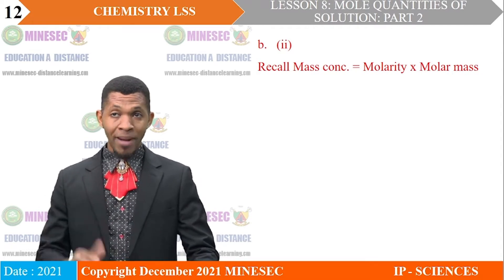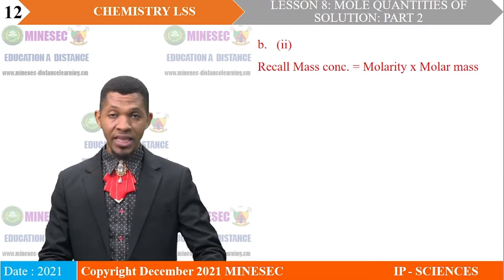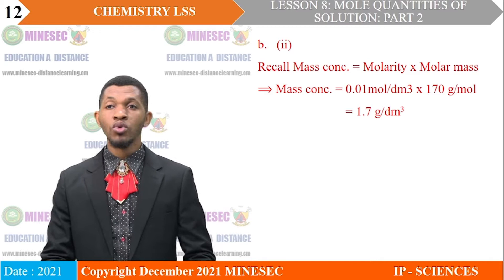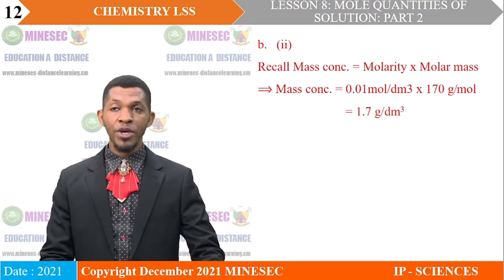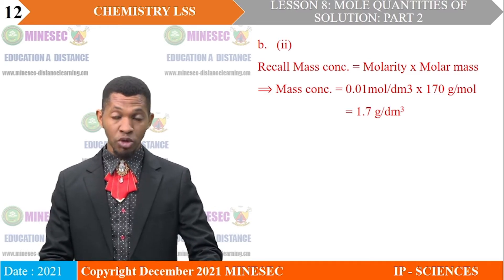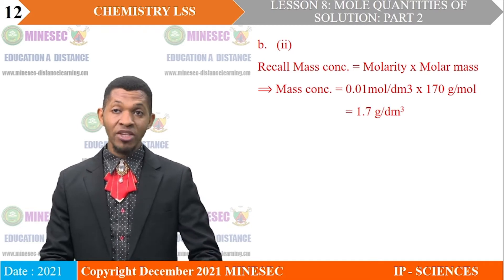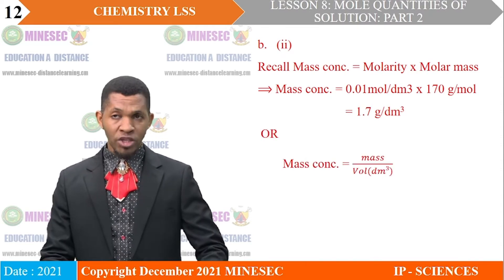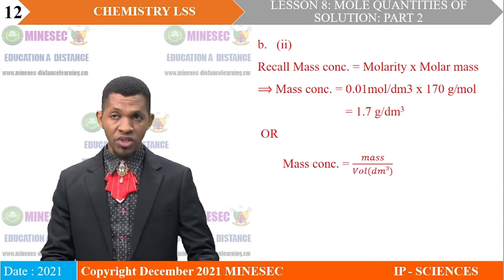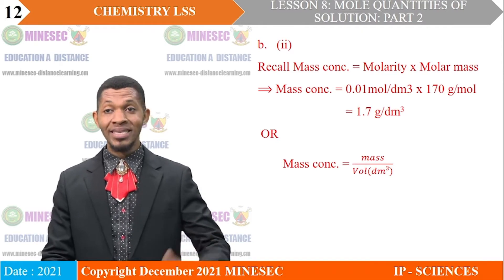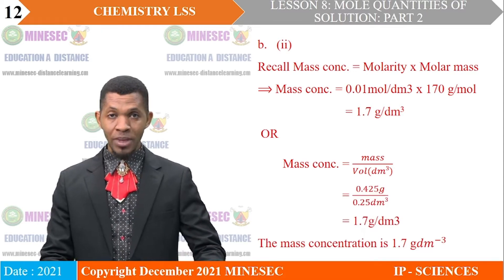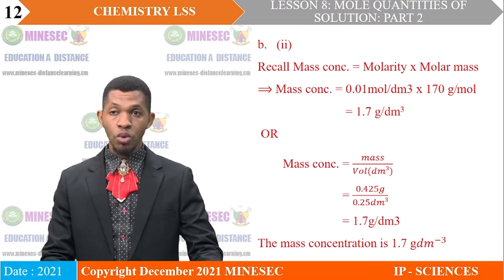Roman 2: Mass concentration equals molarity times molar mass. Substituting molarity and molar mass, mass concentration equals 0.01 moles per cubic decimeter times 170 grams per mole, giving mass concentration equal to 1.7 grams per cubic decimeter. This can also be calculated using mass concentration equals mass divided by volume in cubic decimeters; substituting and simplifying gives the same result of 1.7 grams per cubic decimeter.